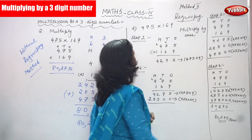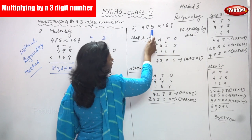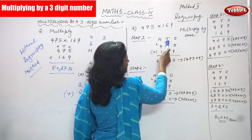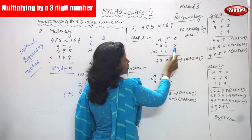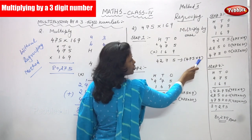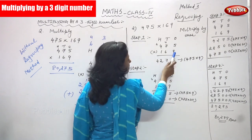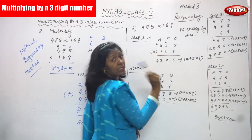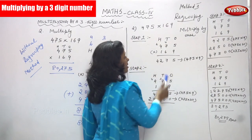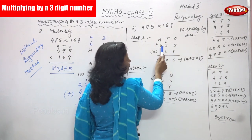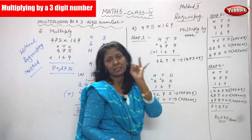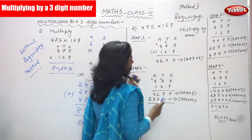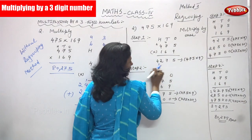Now, regrouping method, Step 1. The number is 475 into 169. I am going to multiply by 9, the 1's place value. 9 fives are 45 — write 5, carryover goes to the tens place. 9 sevens are 63; 63 plus 4 is 67 — write 7, carryover 6. 9 fours are 36; 36 plus 6 is 42. So the first partial product is 4275.